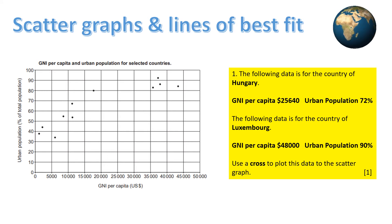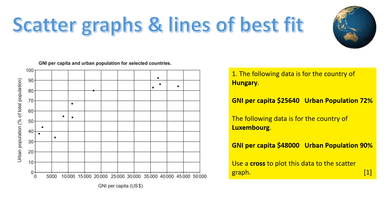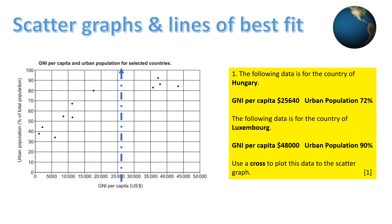You may have to estimate where this is — it's just after 25,000 and between 25,000 and 26,000. Place your ruler vertically there. On this scatter graph, the y-axis shows urban population.